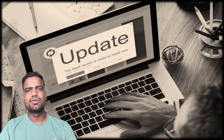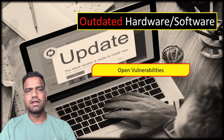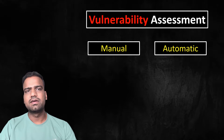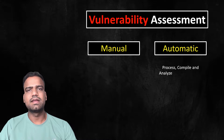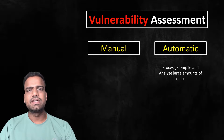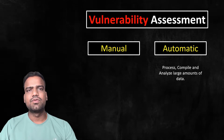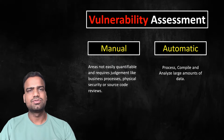Poorly maintained or old equipment is another vulnerability. If an organization uses outdated hardware or software that is no longer supported, it may have known vulnerabilities that remain unaddressed, making them attractive targets for exploitation. Vulnerability assessment can be manual or automatic. Automated tools help process, compile, and analyze large amounts of data, while manual tests are better for subjective areas not easily quantified, such as business processes, physical security reviews, or source code reviews.